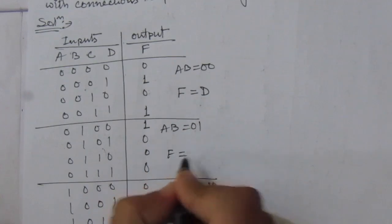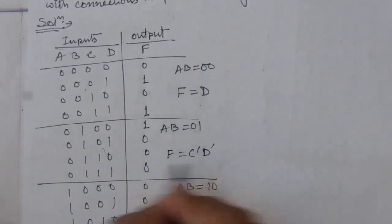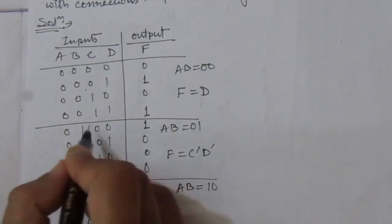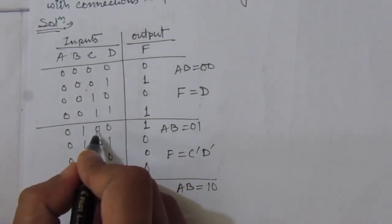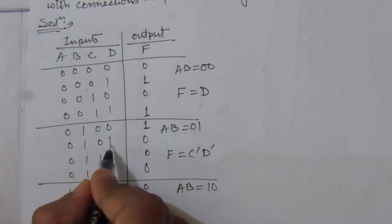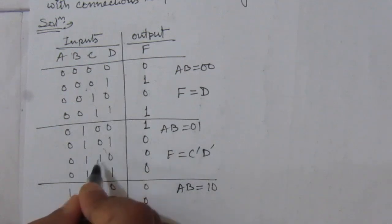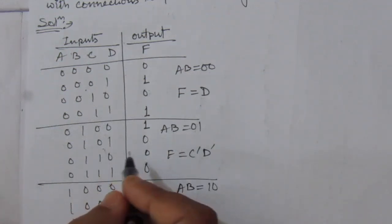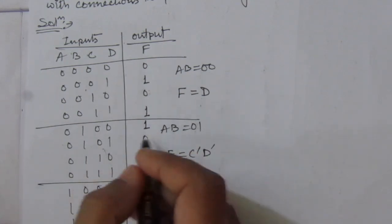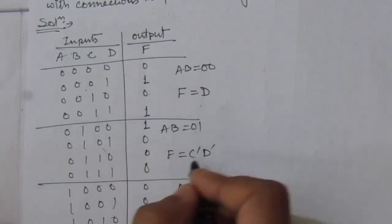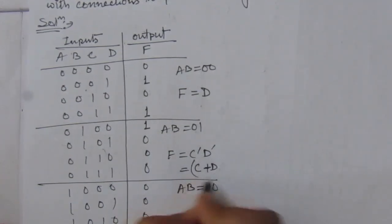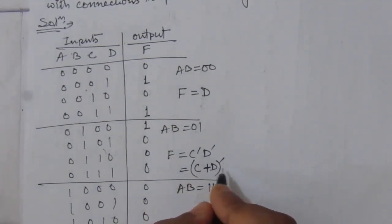For the next case, the output function F will be equal to C̄D̄. Because C̄ means C is 0 so C̄ is 1, and D̄ is 1, so 1 times 1 equals 1. C̄ means 1, D̄ means 0, so 1 times 0 equals 0, and similarly for the others. So C̄D̄ can be written using De Morgan's theorem as (C+D) complement — that is, this is the NOR operation.